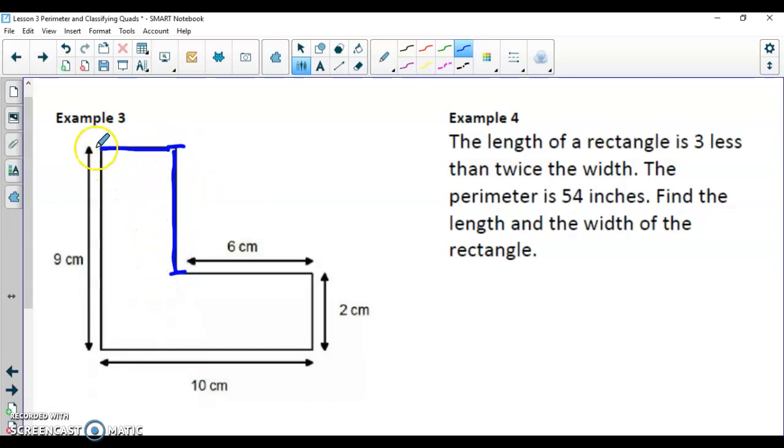Because this is the part that's remaining. So in order to get this missing side, we're going to do 9, which is the whole side, minus the 2 that was used up over here. So how long is this side going to end up being? This missing side is going to be 7 centimeters. 9 minus 2 is 7.